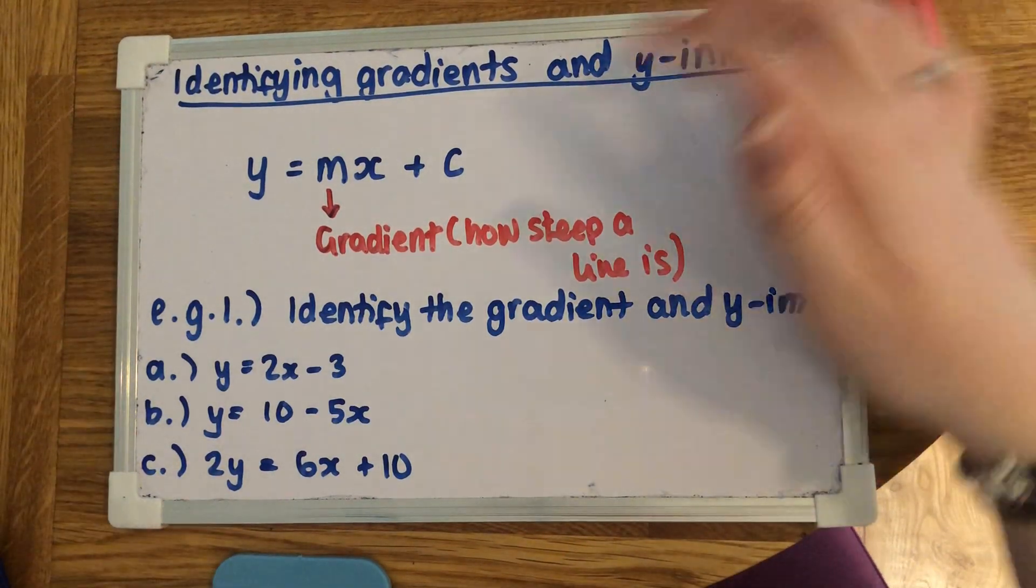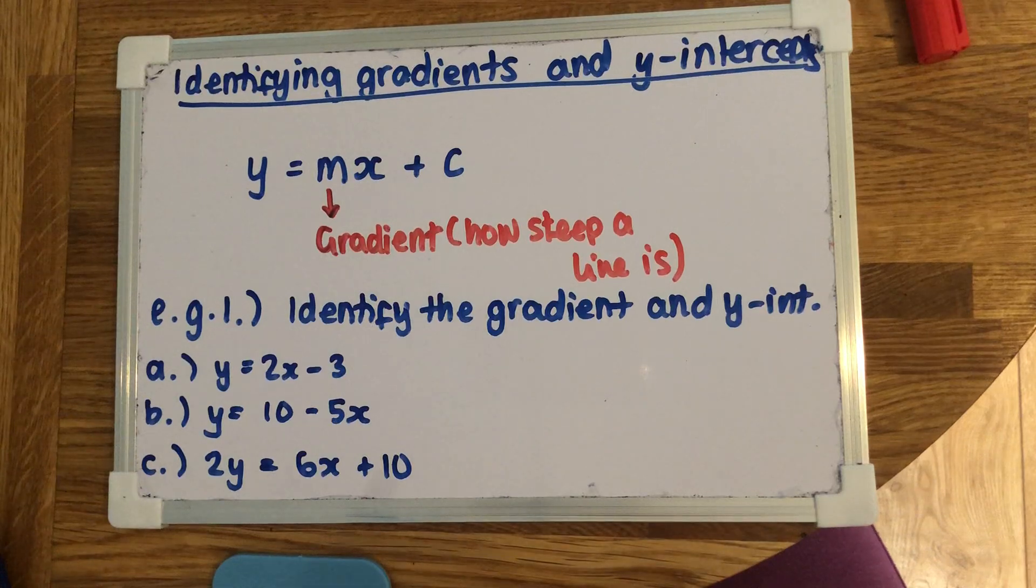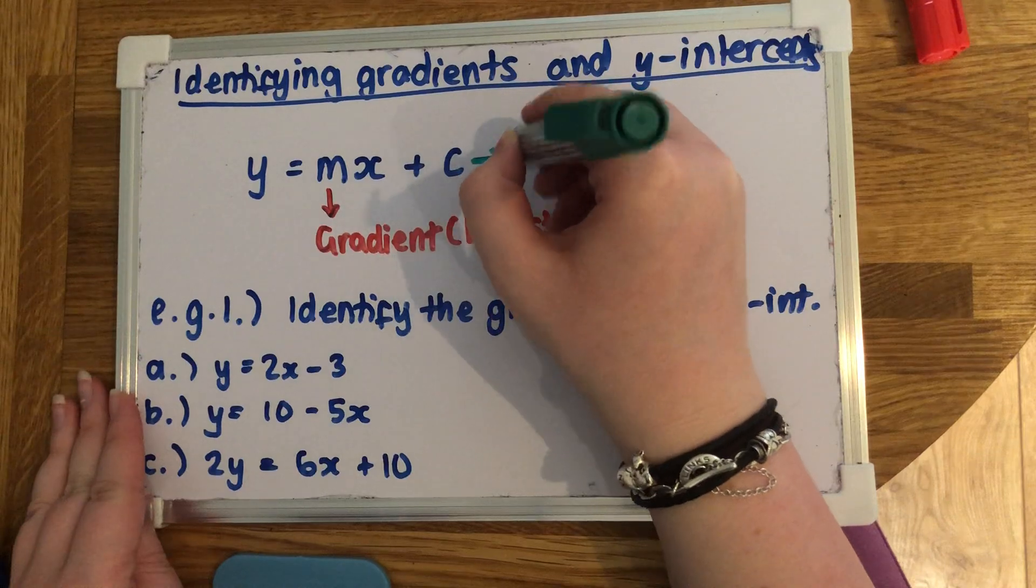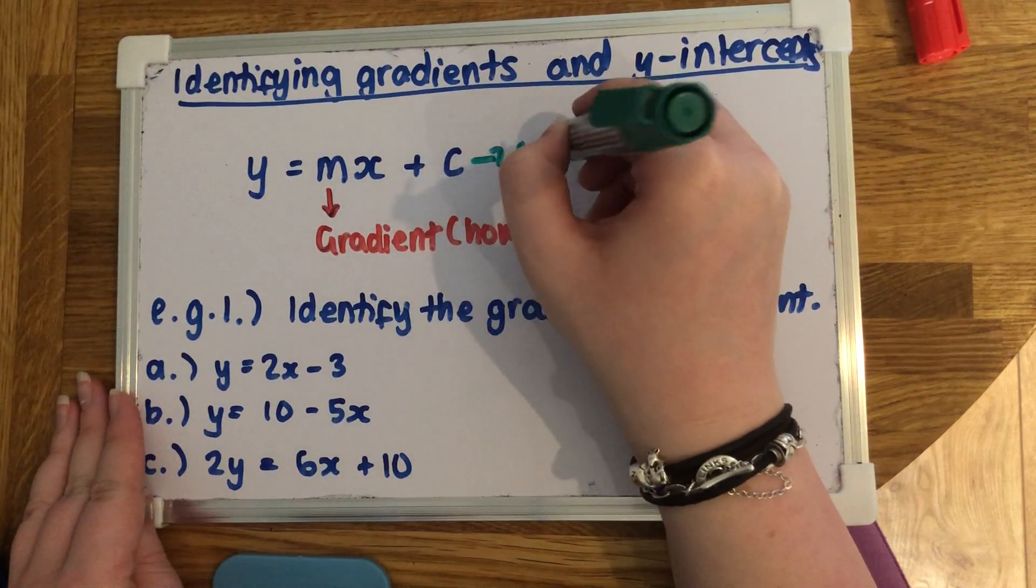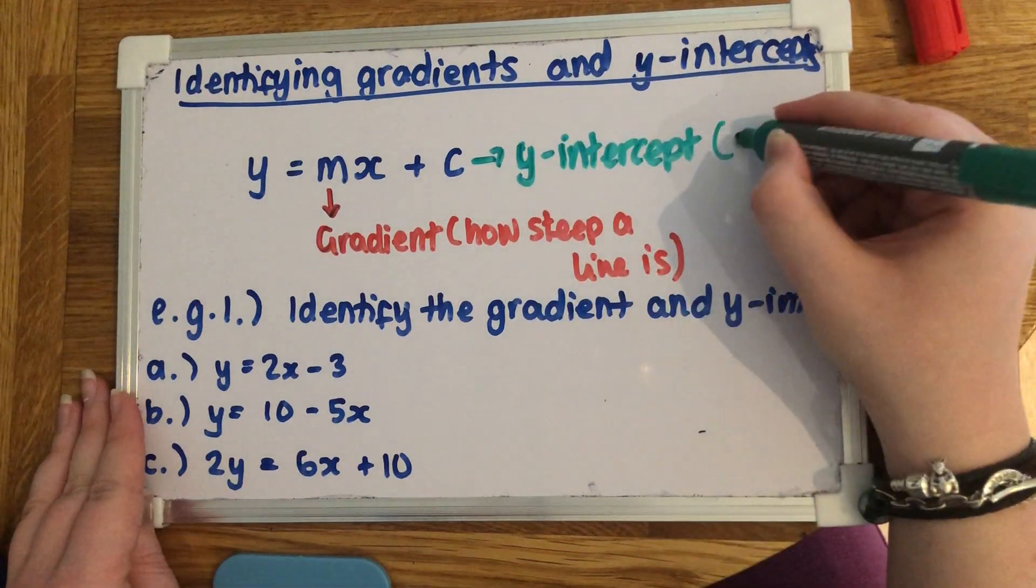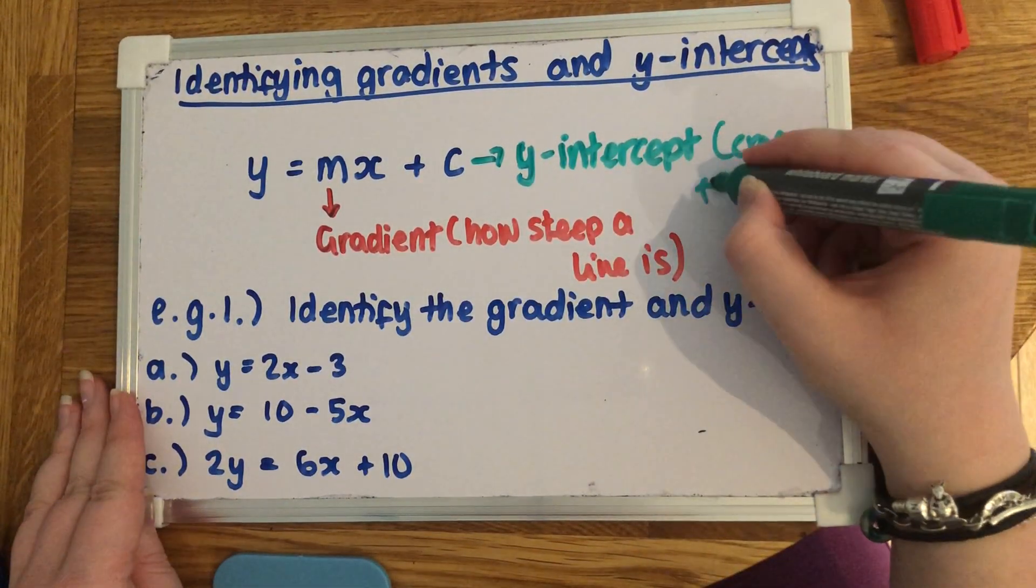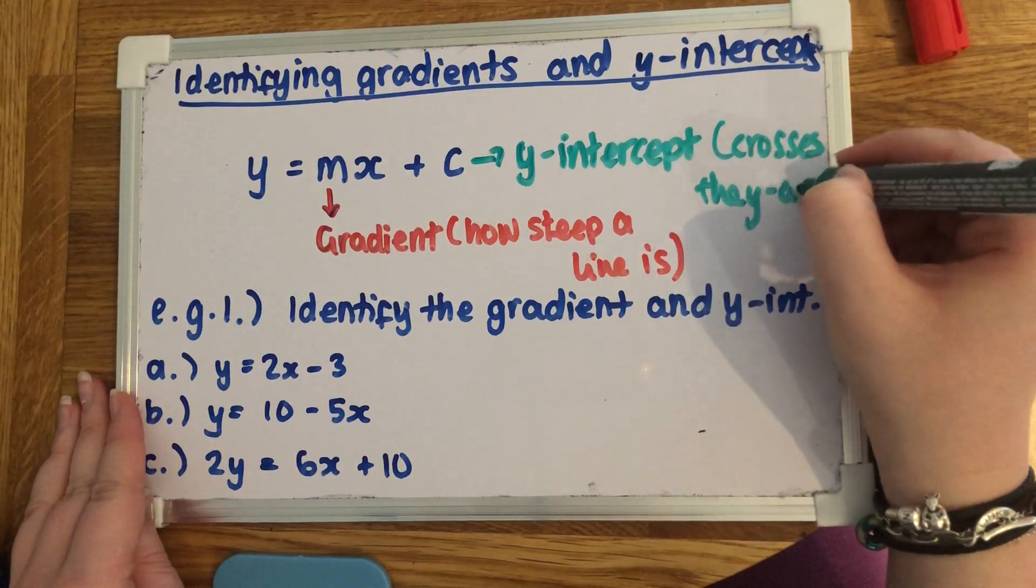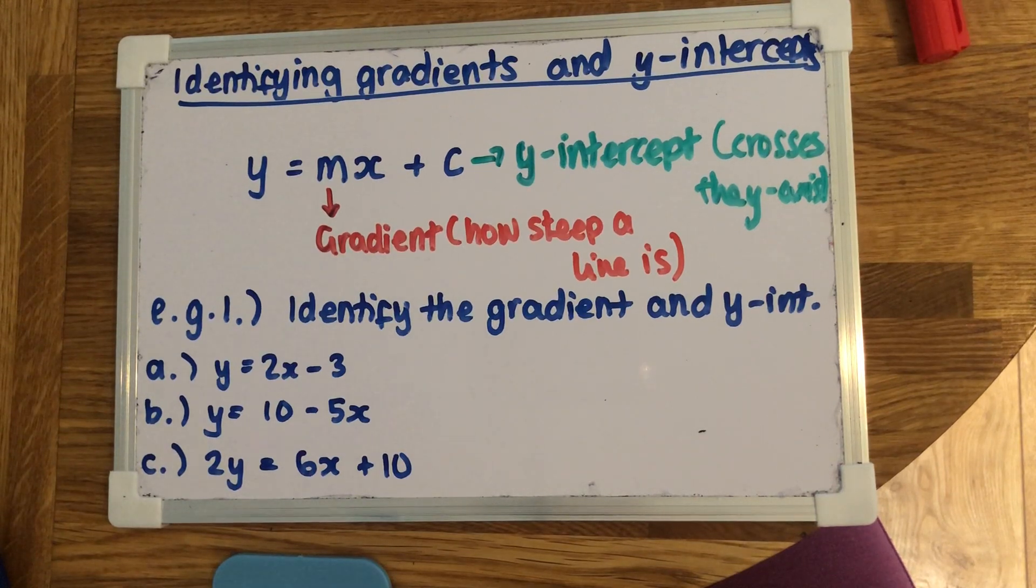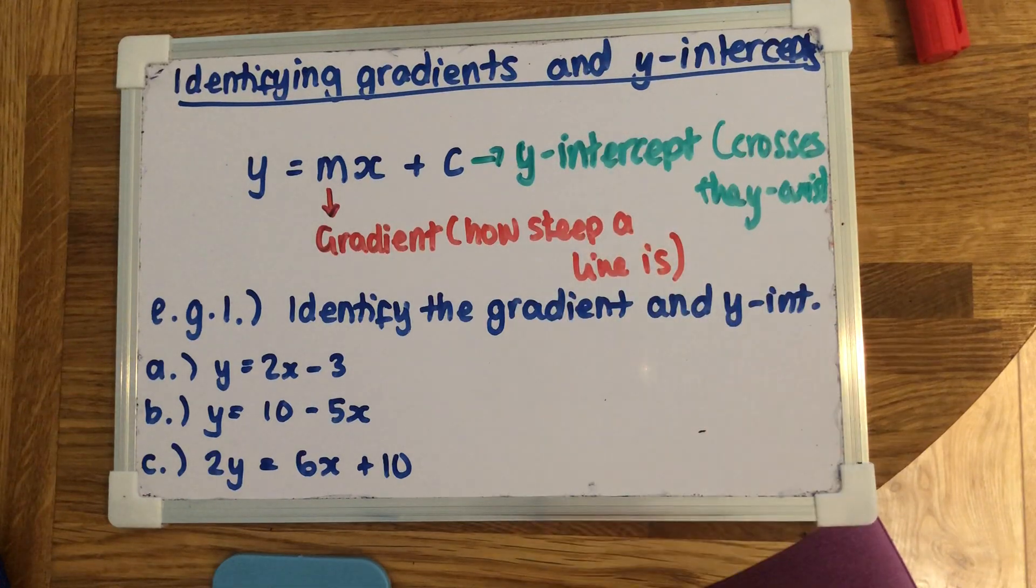And then the next bit is this plus c here. Now this isn't always a positive number, it might be a subtracted number, but this is called the y-intercept. And that's just where it crosses the y-axis. So when we were plotting linear lines, you had the two axes, you had the x and you had the y. The number on the end tells you straight away where it would be crossing the y-axis, which is the vertical one, if you can remember.